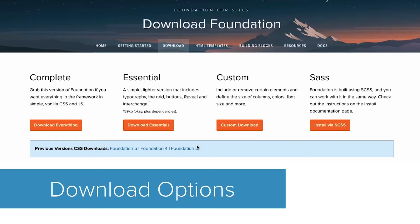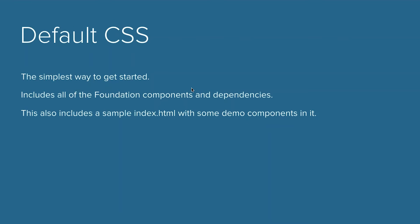So as we mentioned, the default CSS is definitely the simplest way to get started. It includes all of the Foundation components and dependencies — it's kind of the kitchen sink without the Sass version. This also includes a sample index.html with some demo components in it. So this is really handy, especially if you're just getting started. When I started using Foundation, probably back in versions two or three, that sample index.html really painted a picture for me.